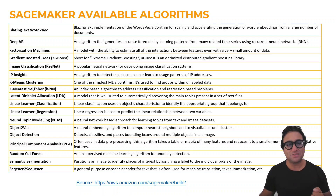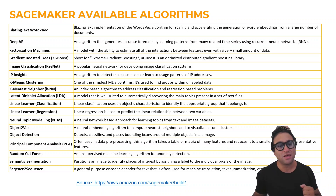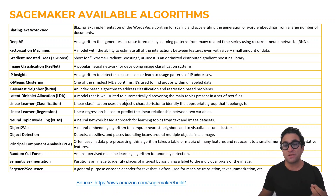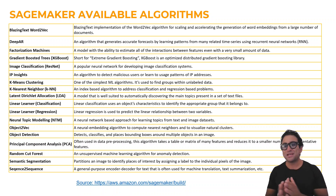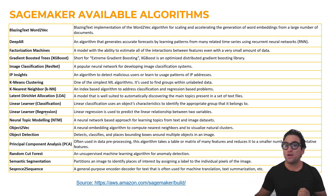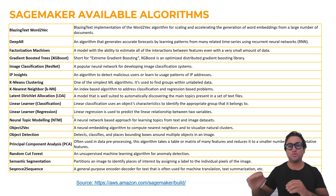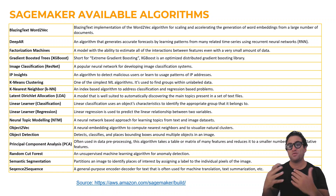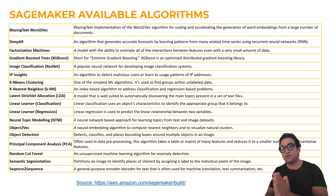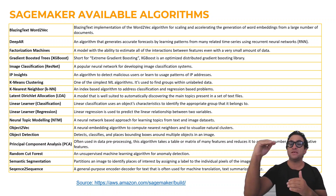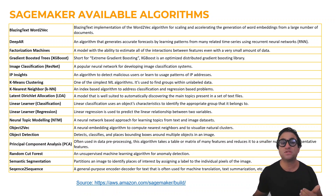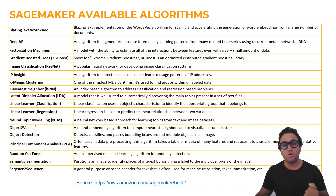We also have IP Insights, K-Means Clustering, and K-Nearest Neighbor. We have LDA to discover topics in text files. We also have Linear Learner — our algorithm for today — and we can use it to perform classification tasks and also regression tasks. We are going to use Linear Learner today to perform regression, predicting a continuous variable. If you wanted to use it for classification, your output would be classes — either binary classification like 0 or 1, or multi-category if you have more than two categories.